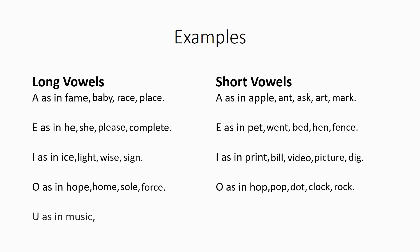Long U is pronounced U or U. So, as in music, huge, unicorn, tuba, and truth. Notice those last two are pronounced U. So, whether it's U or U, they're both long U's. But if it's short, it's pronounced A, as in fun, sun, numb, tub, gum. So, A.